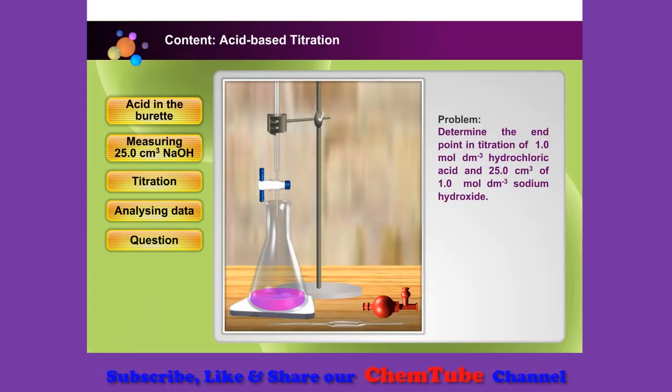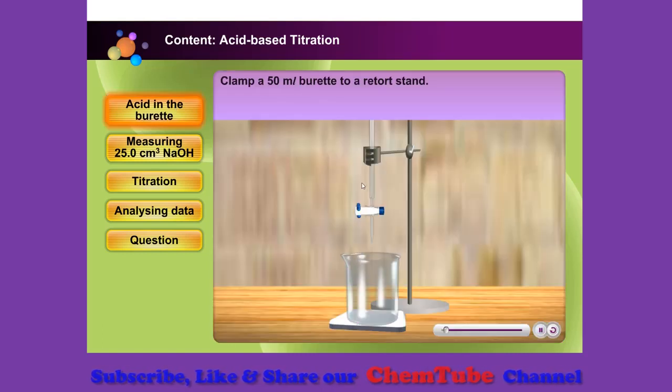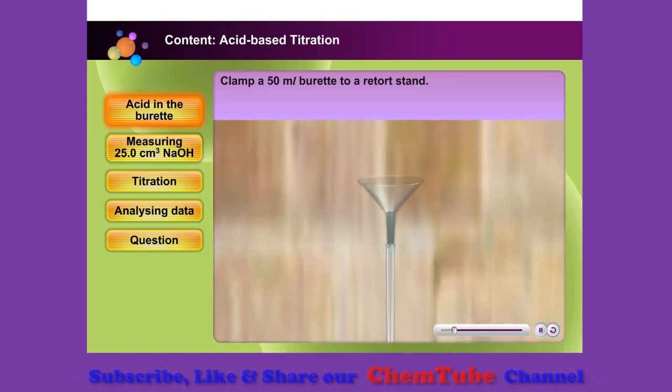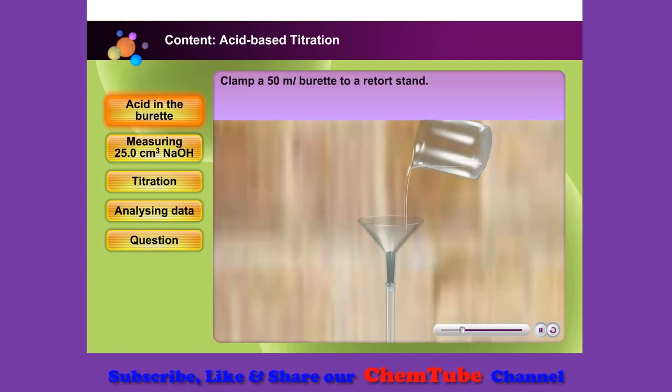Let's carry out an activity to determine the endpoint in titration of 1.0 mol per cubic decimetre hydrochloric acid and 25.0 cubic centimetre of 1.0 mol per cubic decimetre sodium hydroxide. Clamp a 50 millilitre burette to a retort stand. Place a filter funnel and open the stopcock. Rinse the burette twice with 5 cubic centimetre of hydrochloric solution.